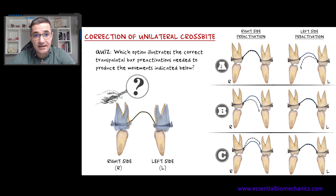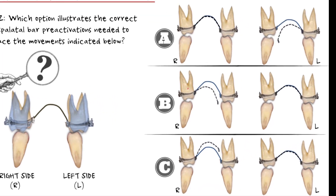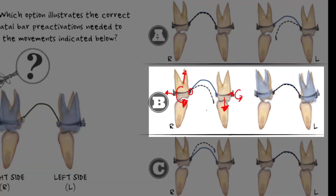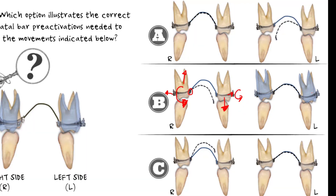Coming back to our three examples, let's draw all the forces and couples involved so we can better understand and predict the resultant tooth movements. In situation B, in which I applied only a lingual crown torque, I will have a great couple here, a small couple here, an intrusive force here, an extrusive force here, and also expansive force because of the lingual crown torque applied and the association of forces and moments. The resultant tooth movement will be an uncontrolled tipping on the contralateral side and a translation on the crossbite side — this is not what we are looking for.